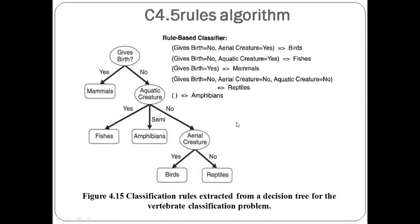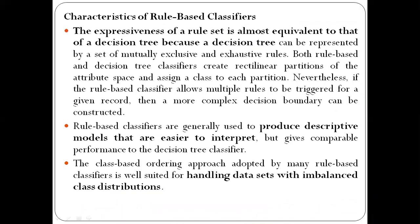The C4.5 algorithm follows a class-based ordering scheme. In this scheme, rules having the same class label appear together. This class-based ordering scheme is one of the methods used for ordering the rules in the indirect method for rule-based classifier generation.